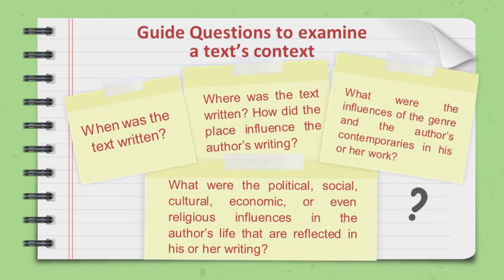From the given types and components of context, the following are some questions you can ask about a text to examine or understand its context. Number 1: When was the text written? What was society like back then? Number 2: Where was the text written? Number 3: What were the political, social, cultural, economic, or even religious influences in the author's life that are reflected in his or her writing?